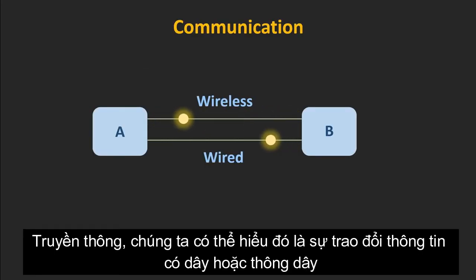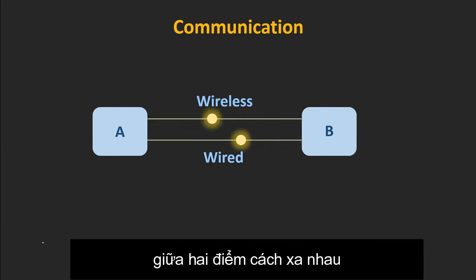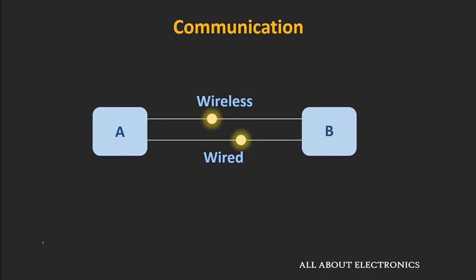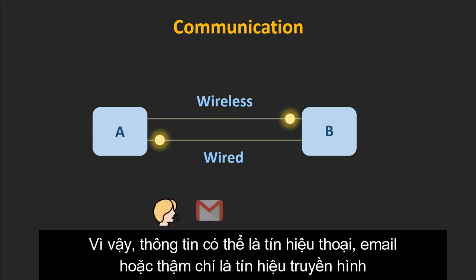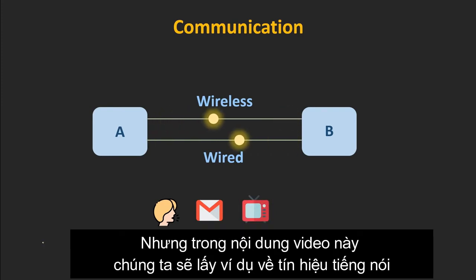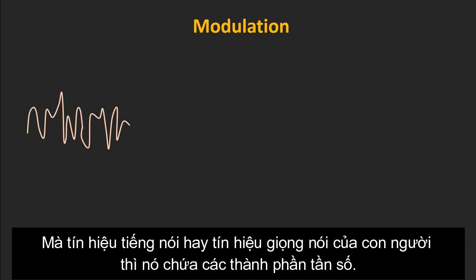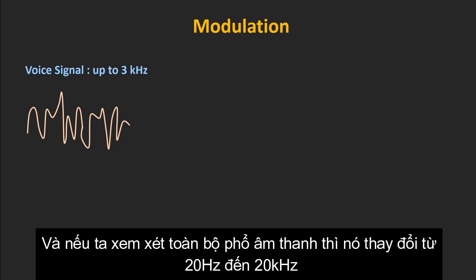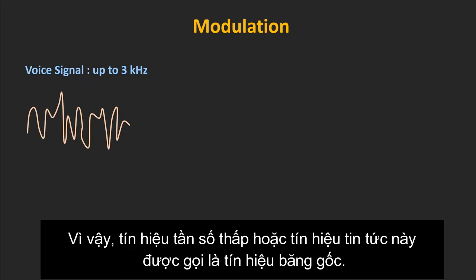In a broad sense, communication is an exchange of information either wired or wirelessly between two points which are far away from each other. This information could be a voice signal, email, or even a television signal. If we consider the speech signal or the human voice signal, it contains frequencies up to 3 kHz. And if we consider the entire audible spectrum, it varies from 20 Hz to 20 kHz. This low frequency message signal is known as the baseband signal.